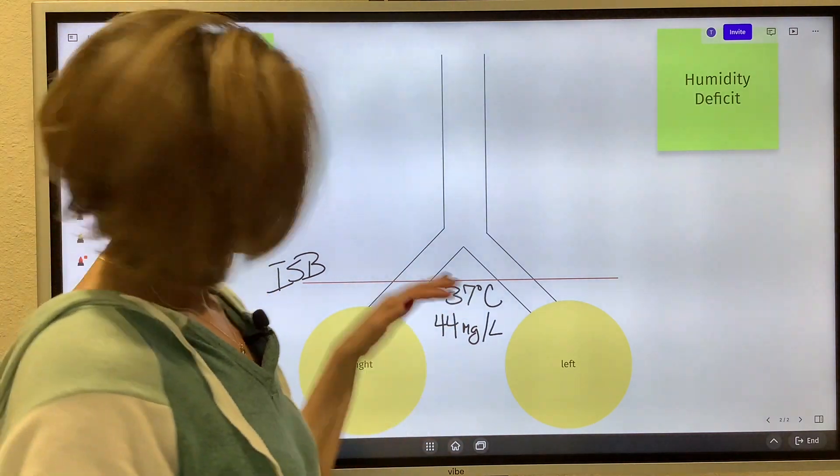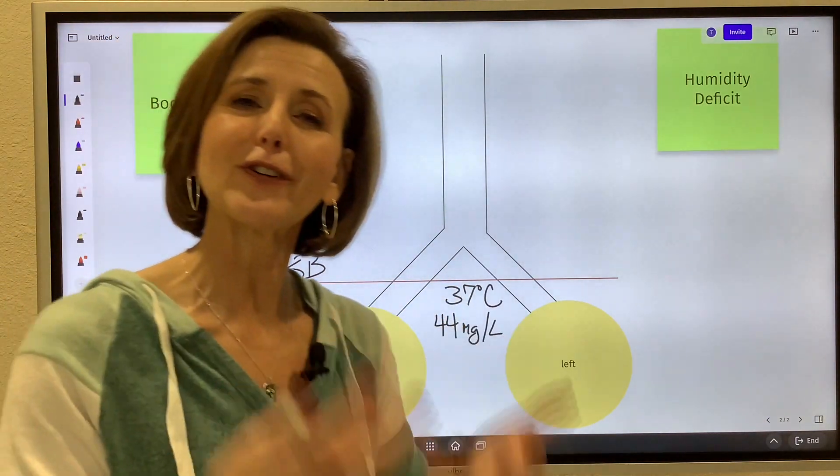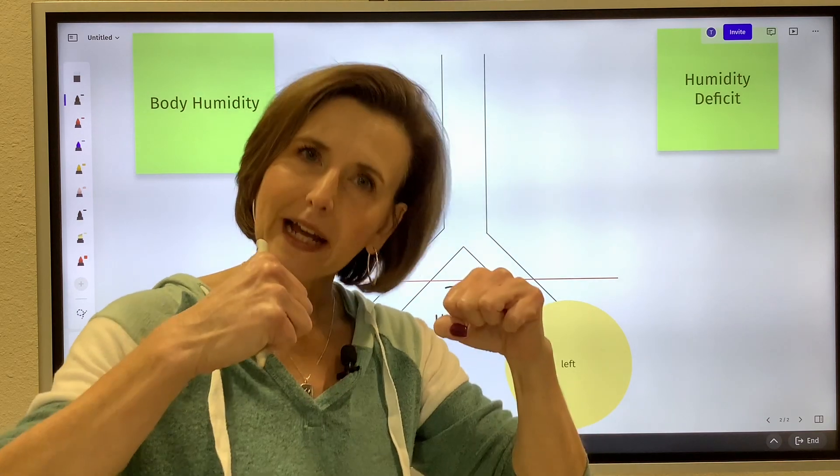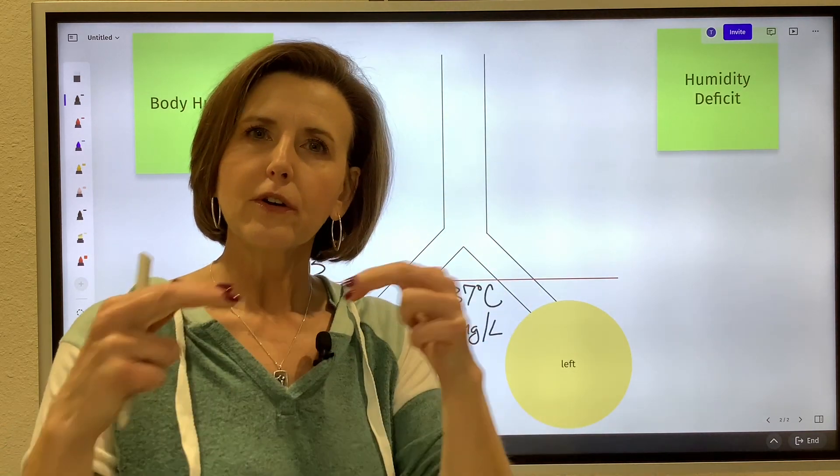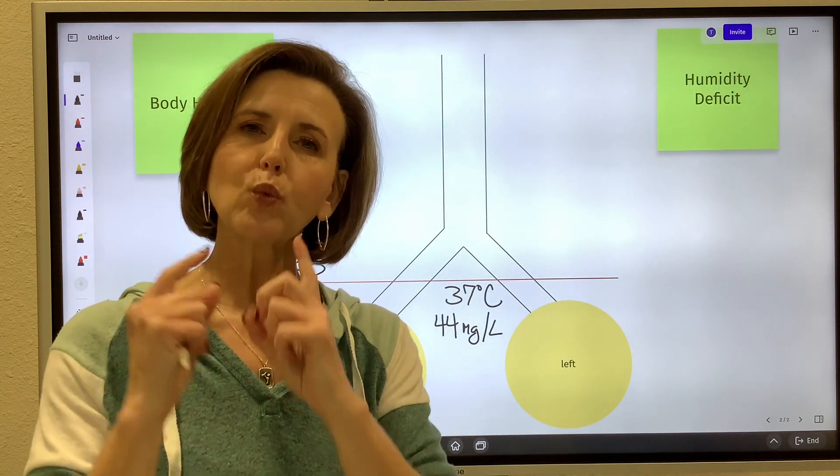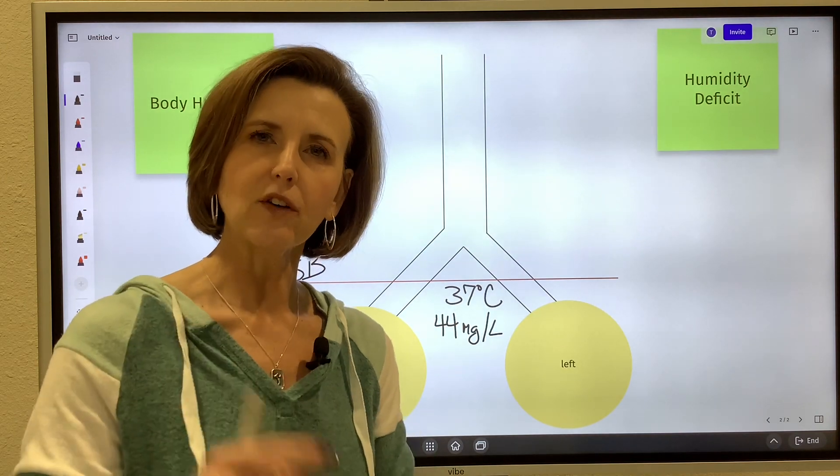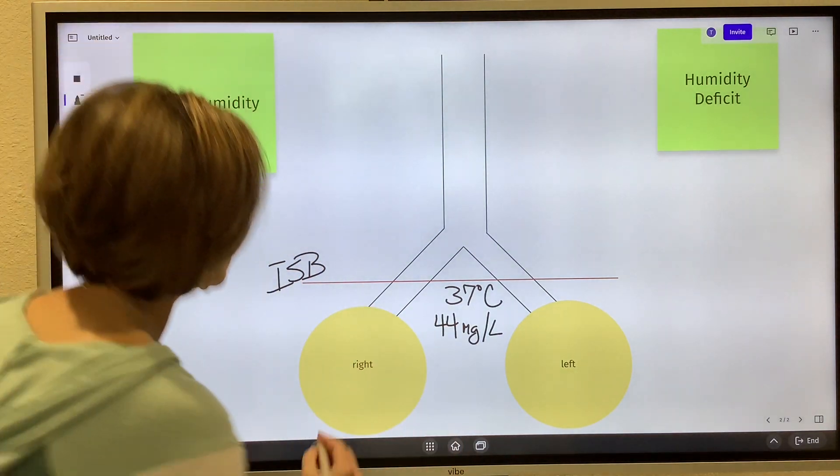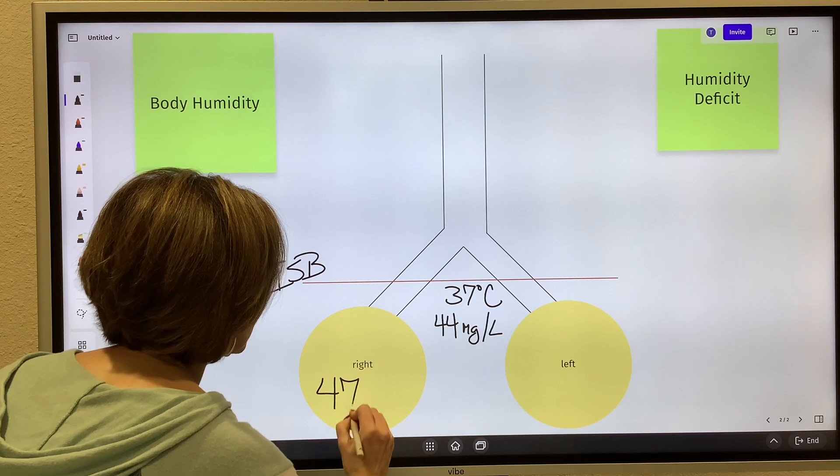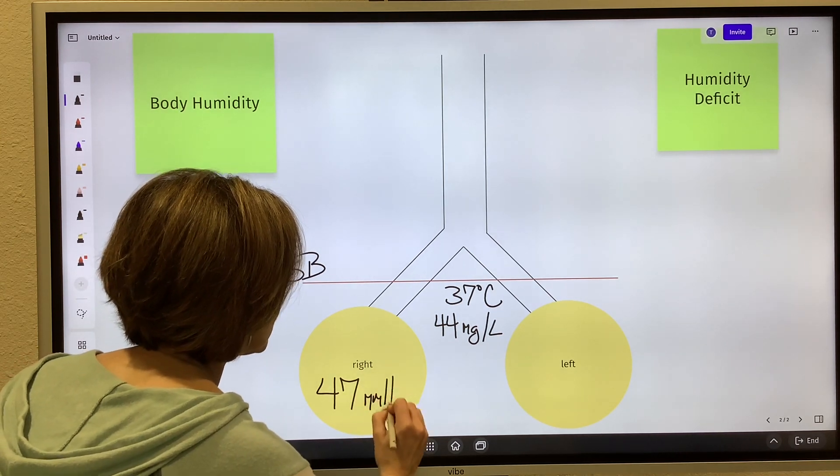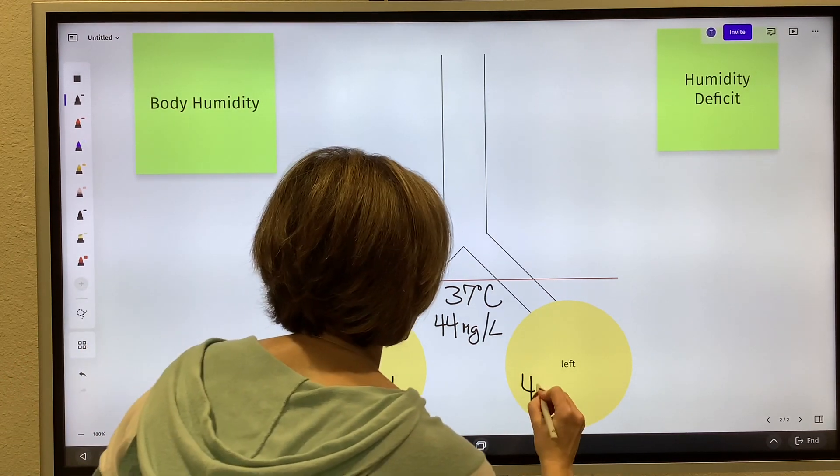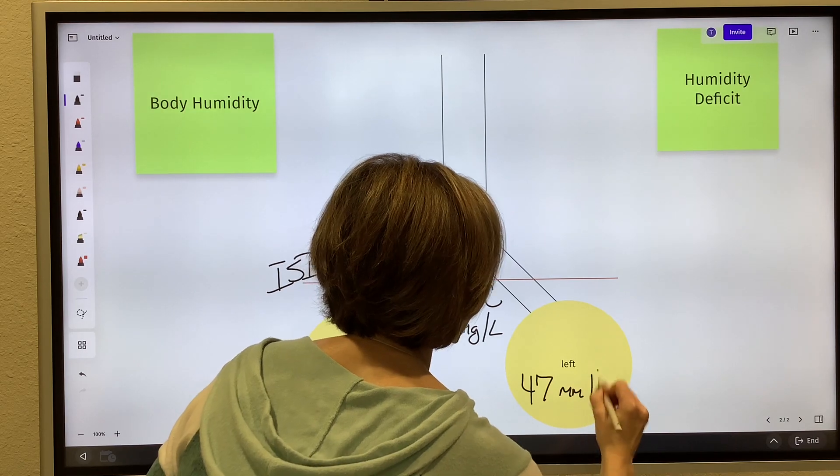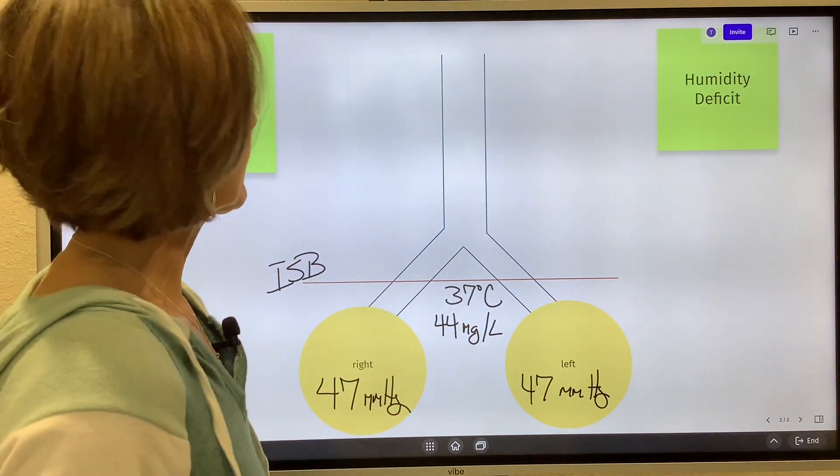Just a fun fact: that 44 milligrams per liter, it's a weight, but it also creates a pressure - water vapor pressure, which is what you are using in your alveolar air equation. And what I'm going to do is draw this in the alveoli so we don't get the two mixed up.